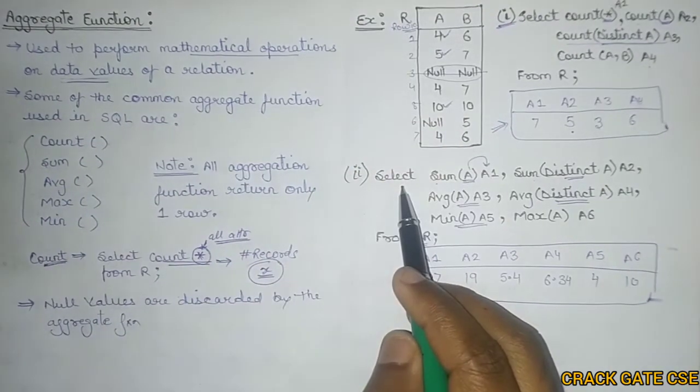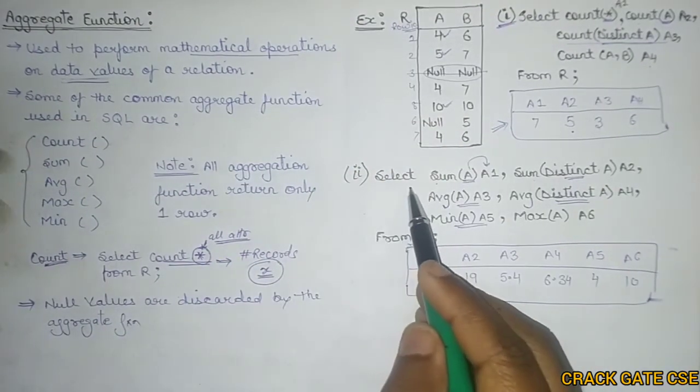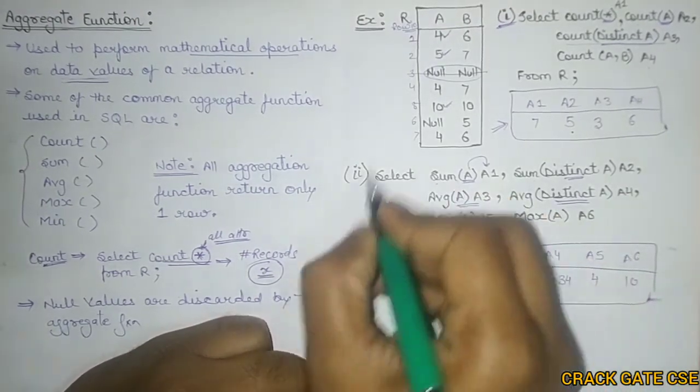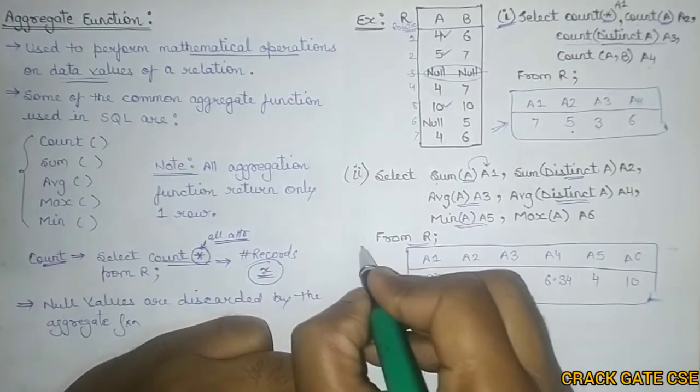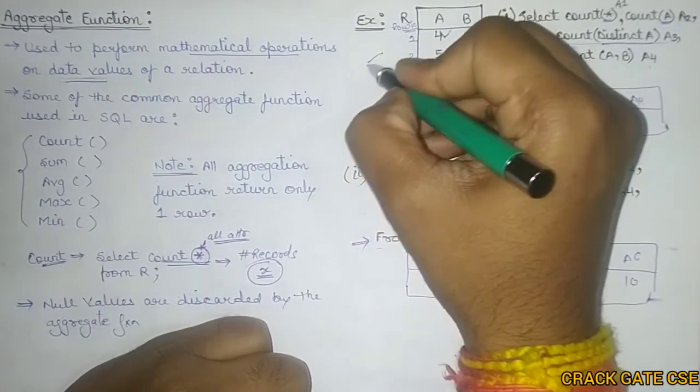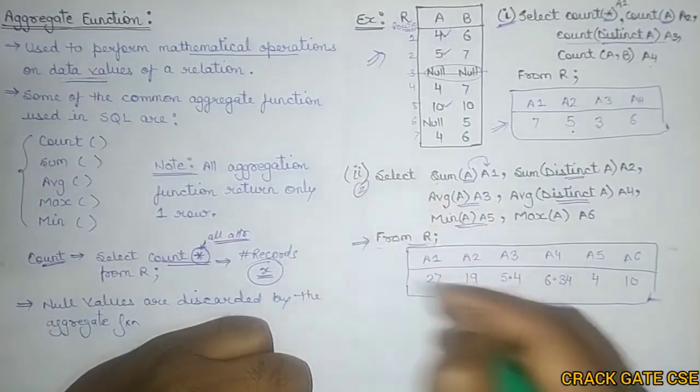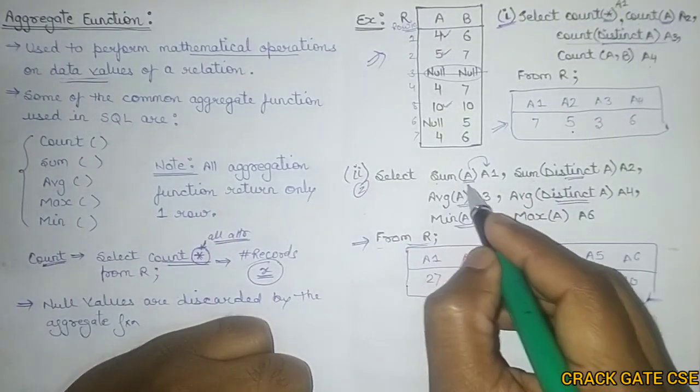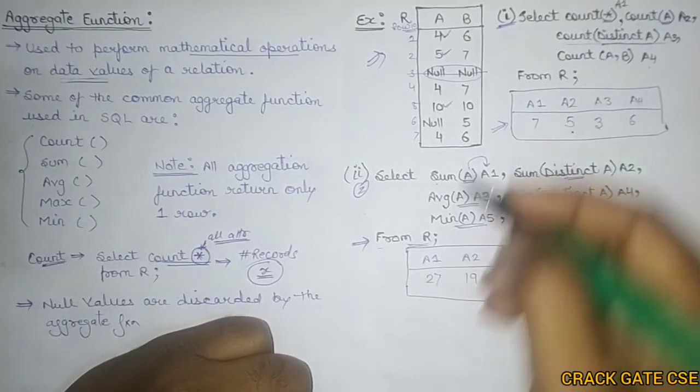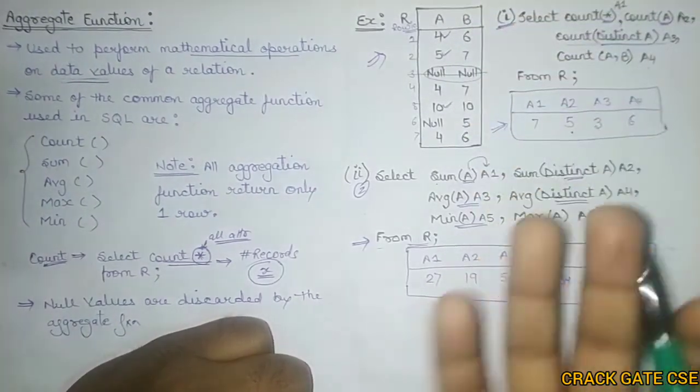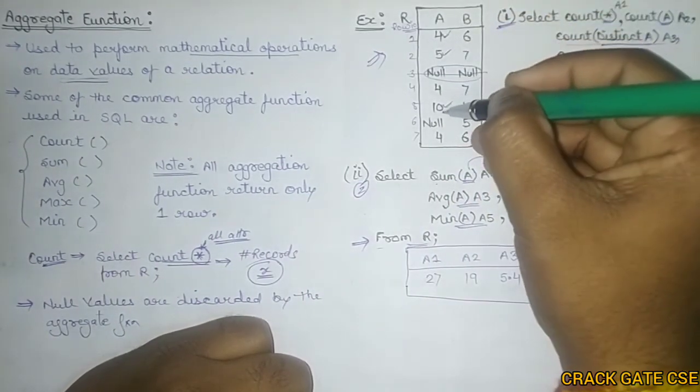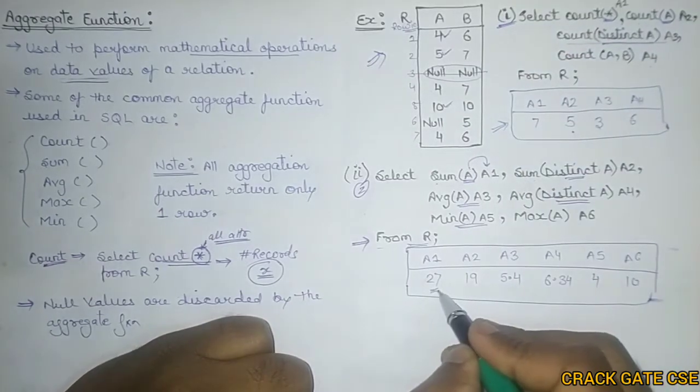Now let's try to understand the other example apart from count. We will understand these 4 attributes with the help of this second example. First of all, as I told you in the execution flow, we have to check the from. So we have to take from R. Now we have to go with the select. In select I am having sum of A and store it in A1. So in A1, I am storing the sum of all the values. Null values will be discarded. This 4, 5, 4, 10, 4. If you sum up all these, it will be 27.